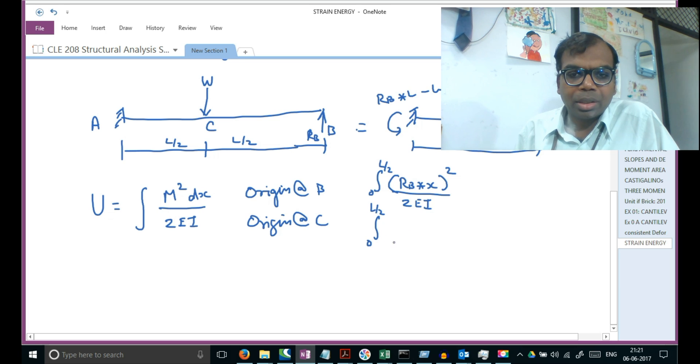Again with origin at C, it's 0 to L by 2, and RB into L by 2 plus X the whole square. I still have one more term - the other term is W into X. If I call this a positive moment, the other one is a negative moment WX, and this is the whole square. I forgot the dx here. Now we have two terms to put together and add up.